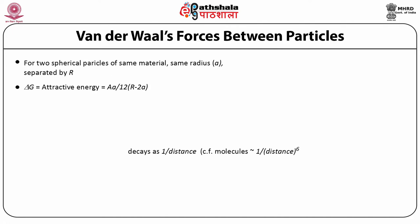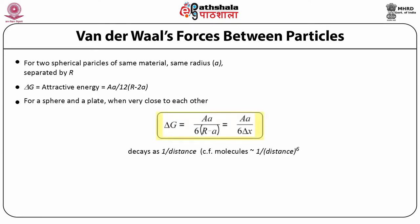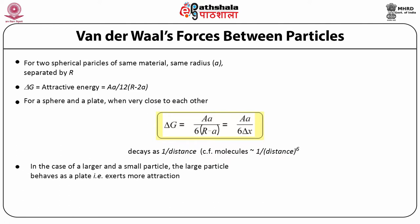The Van der Waal attraction energy for a sphere and a plate which are very close to each other is given as ΔG = A·a / (6·(R − a)) = A·a / (6·Δx). The Van der Waal attraction for macroscopic bodies such as particles decays as the reciprocal of the distance between them. In the case of a larger and a smaller particle, the larger particle behaves as a plate and exerts more attraction, and the smaller particles are attracted more towards the larger particles than towards each other.